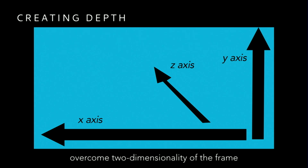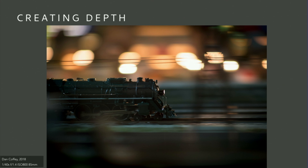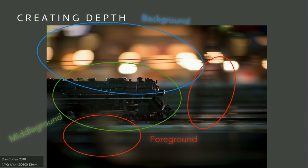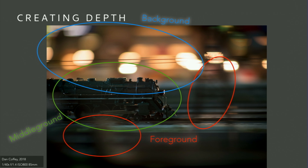In normal daily life we see in three dimensions — X, Y, and Z axis — but we need to overcome this in a frame because a still image is typically just two dimensions. We add depth by thinking of three planes: the foreground (things in front of your subject), the middle ground (typically the subject itself), and the background. How far apart these planes feel depends on your lens choice.